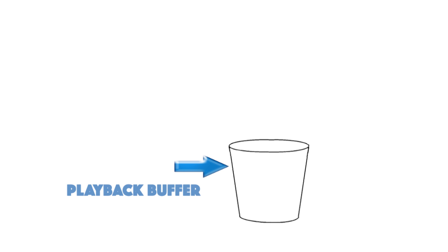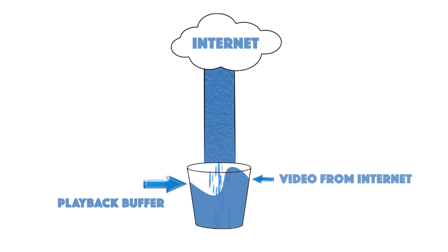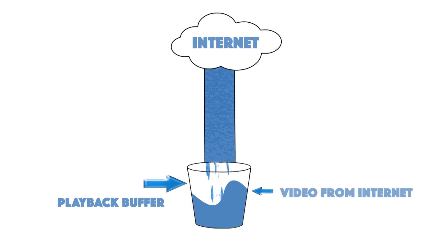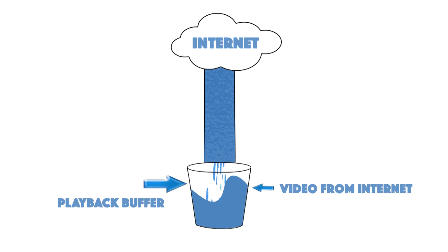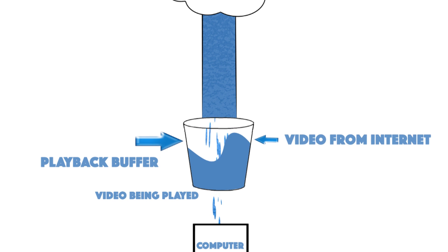What we need is some mechanism that can adapt the quality of the video — the resolution and so on — as the network changes dynamically. When video gets downloaded from the internet, it gets placed into a playback buffer. Consider this playback buffer to be a bucket, and consider video to be water. The video downloaded from the internet fills up the bucket, and the video played onto the screen is like a hole in the bottom of the bucket that consumes water.